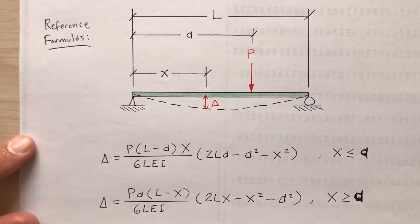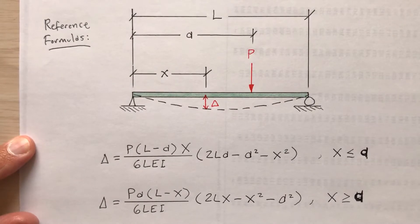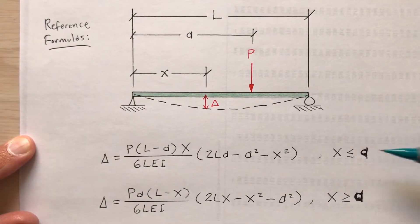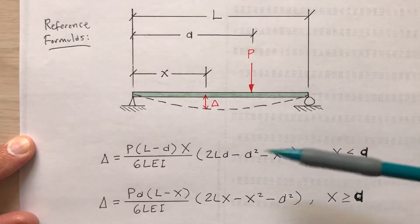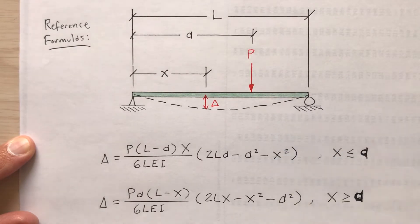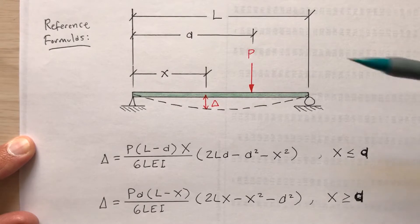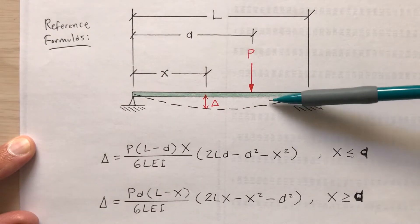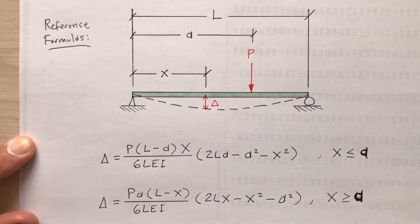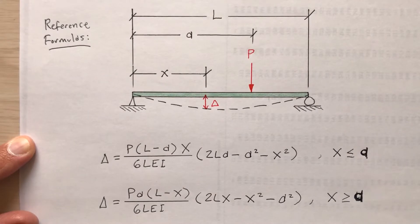Here are the cookbook formulas. If I'm interested in the deflection to the left of the load, that's x less than or equal to A, then I use the first formula. If I'm interested in the deflection to the right of the load, I'd use the second equation — that's if x is greater than or equal to A.